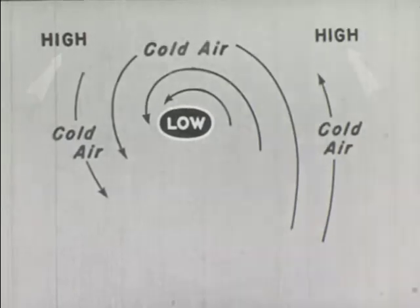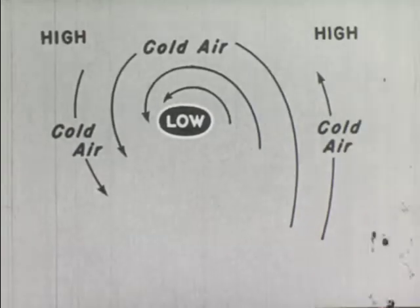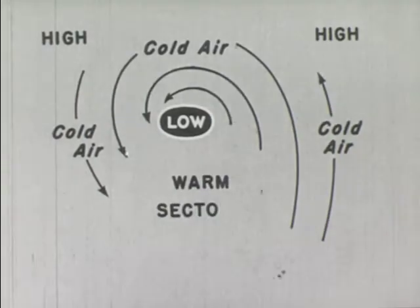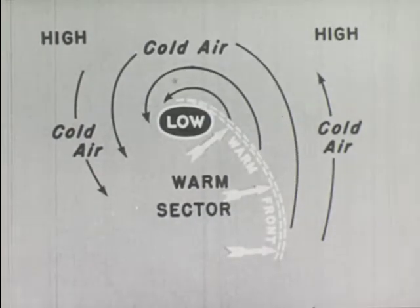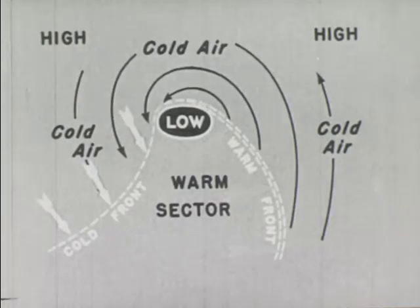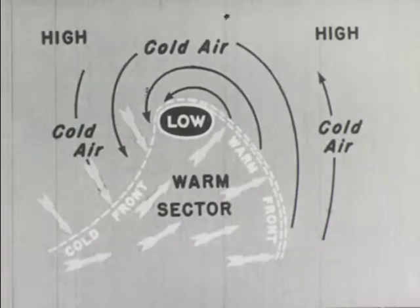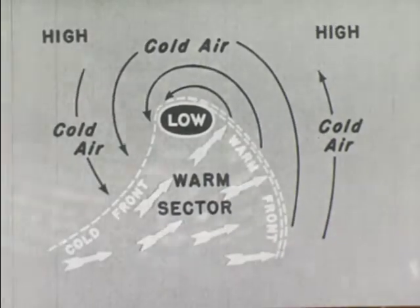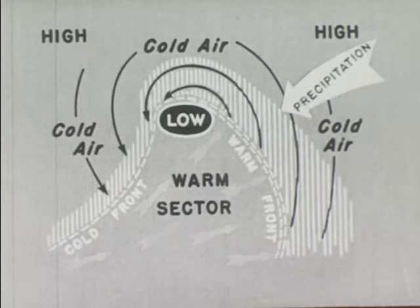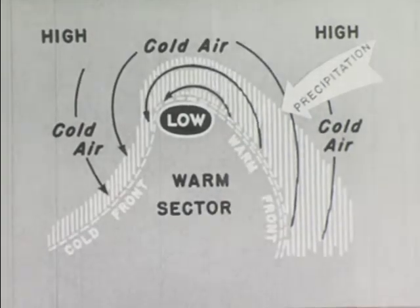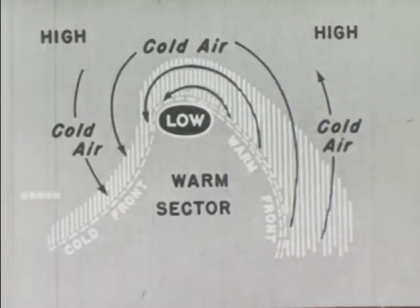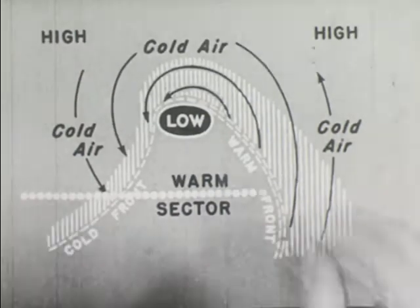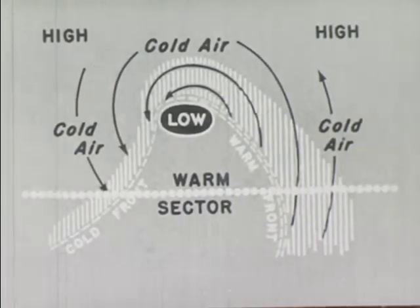We have cold air east, north, and northwest of the center, with a warm sector to the south. A warm front with easterly, then southerly winds. Beyond the warm sector, a cold front where south winds shift to northerly. Where warm, moist air overrides cold air, there is precipitation — rain or snow. Now, along a line cut through the center of the cyclone, let's watch these fronts go by.